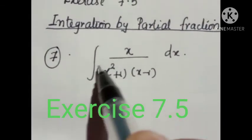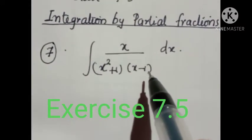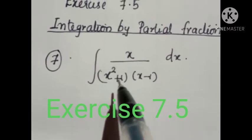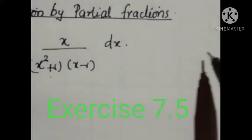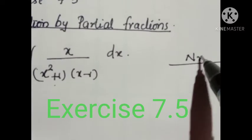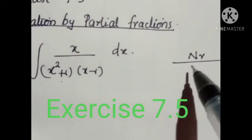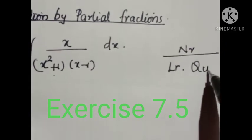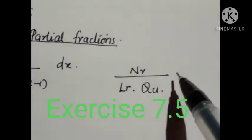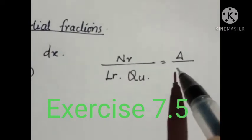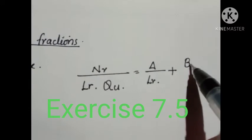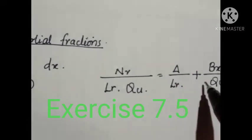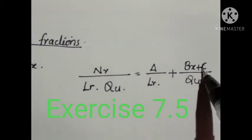Concentrate the denominator — here the denominator is in the form of a linear factor into a quadratic factor. Suppose we have an integral whose denominator is a product of a linear factor and a quadratic factor. This integral can be represented as A by the linear factor, plus Bx + C by the quadratic factor.